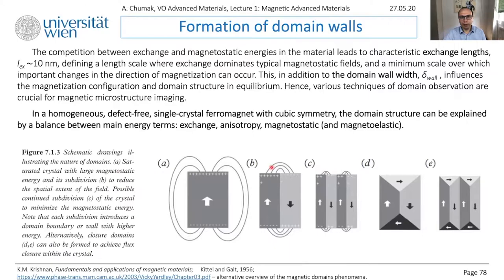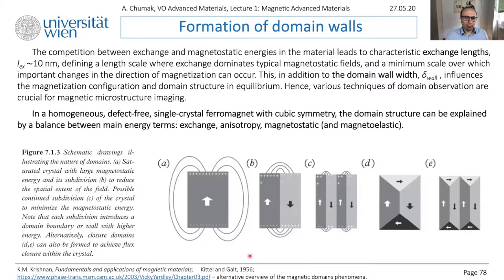So when you have — we discussed already the main idea — it comes from the internal field model of Weiss. If you have a piece of magnetic material which is magnetized in one direction, then you will get this imaginary magnetic poles here, and it will create a large dipolar field around. If you integrate over the volume around the sample, you will get quite large potential energy of the dipolar stray field.